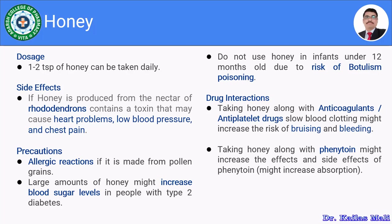The precautions are: honey should be avoided in allergic conditions, as there may be chances of sudden allergic reactions. Furthermore, it may increase blood sugar levels in people with type 2 diabetes, so it should be avoided in type 2 diabetes. It should not be given to infants under 12 months of age due to the risk of botulism poisoning.